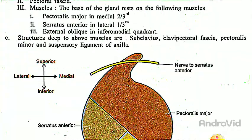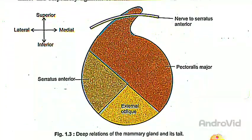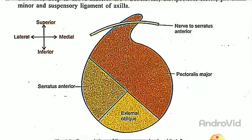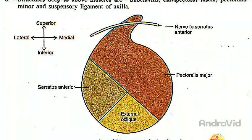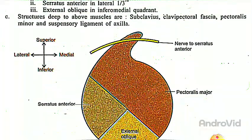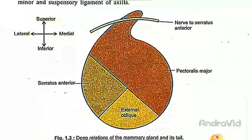You can see the deep relations of the mammary gland in the diagram. Here you can see the serratus anterior, external oblique, pectoralis major, and the nerve to serratus anterior is also shown. The diagram indicates the superior, lateral, and medial directions, which helps in relating these structures.